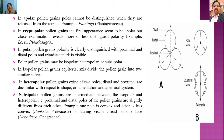Subisopolar pollen grains are intermediate between isopolar and heteropolar — the proximal and distal poles are only slightly different from each other, for example one pole is convex and the other is less convex, or having a basal thread. An example of subisopolar pollen grains is found in family Onagraceae, genus Oenothera.